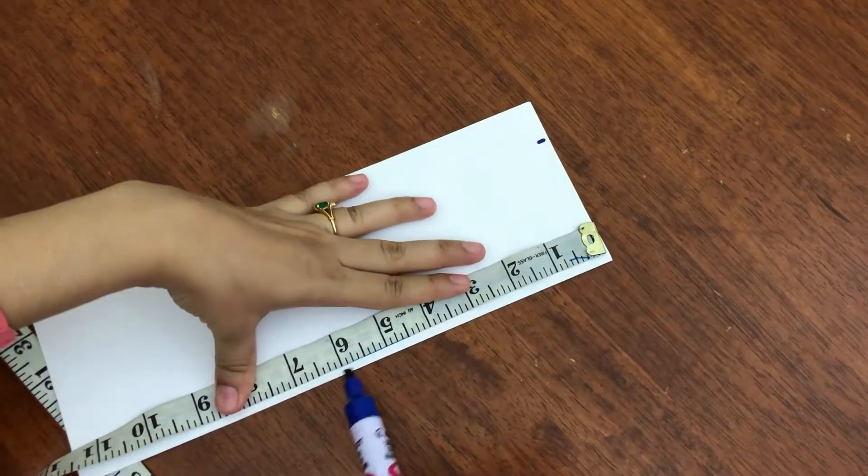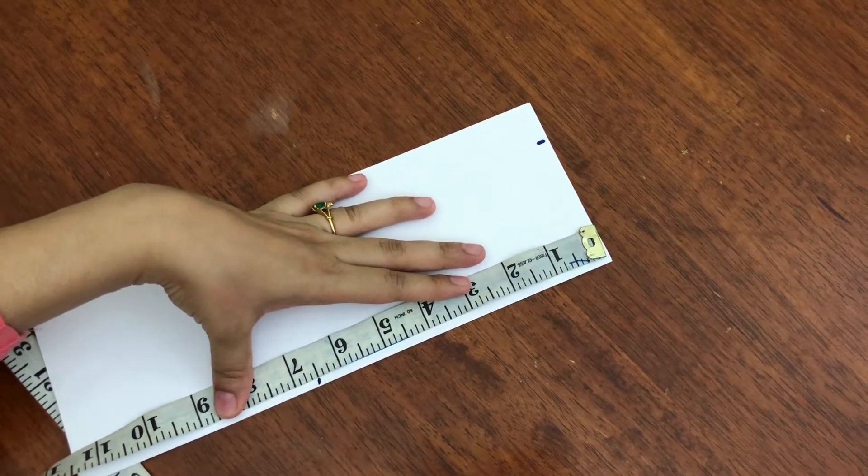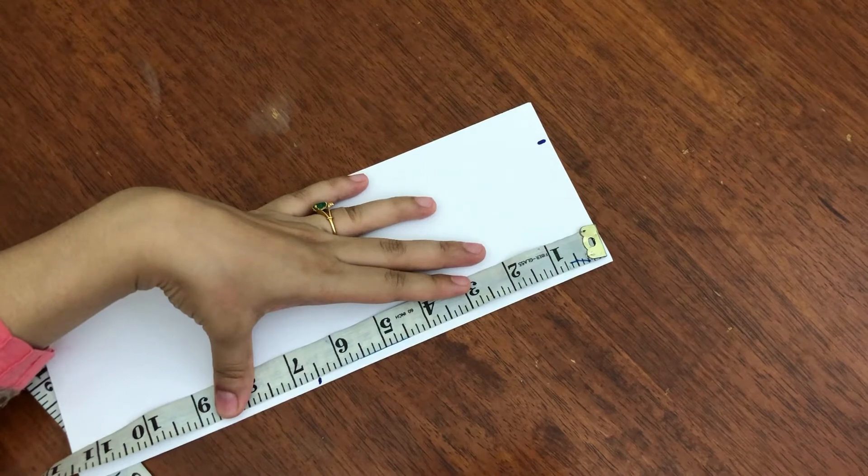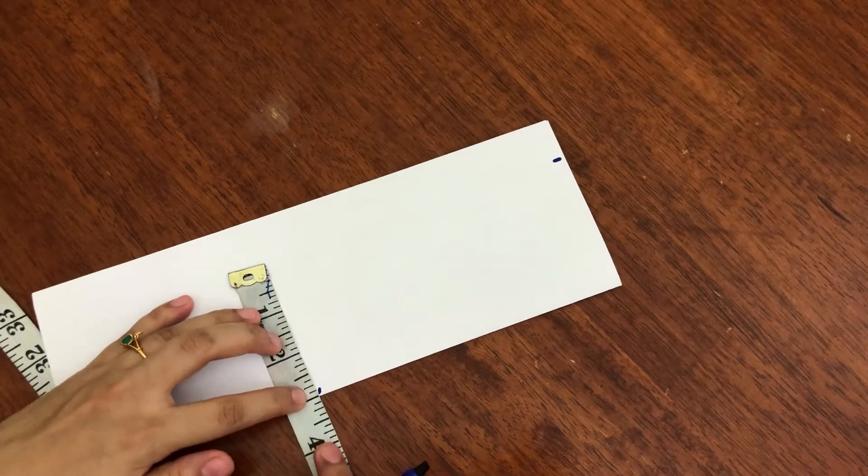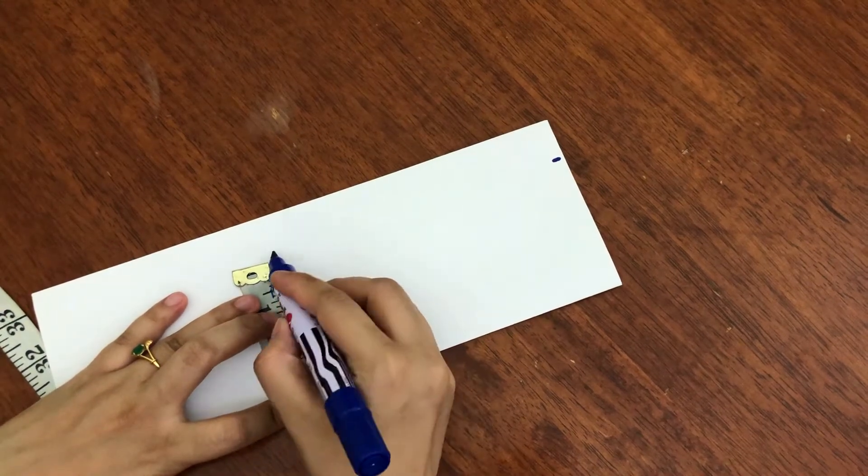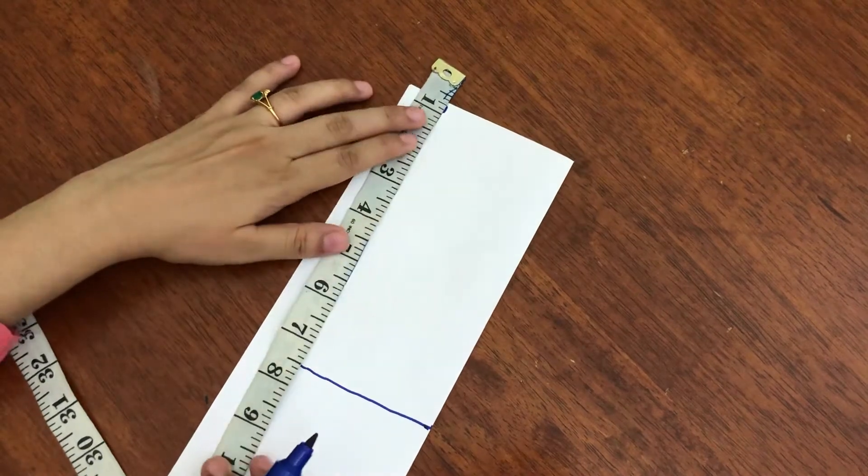If you want to make a 6 inches deep neckline, you will mark 6.5 inches. You will put a 3-inch mark at this point from this point. And you will get it from the upper point.